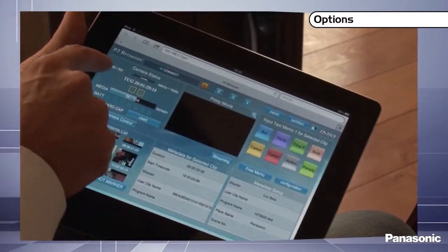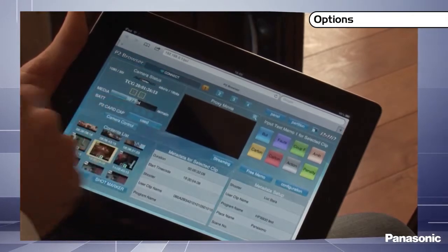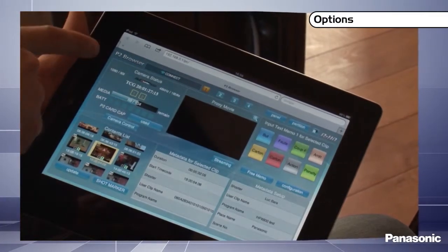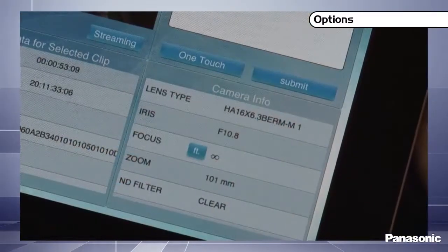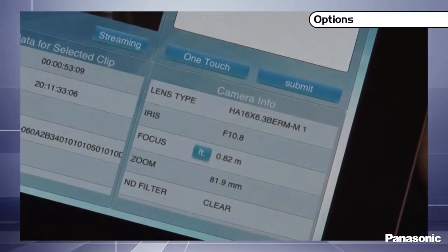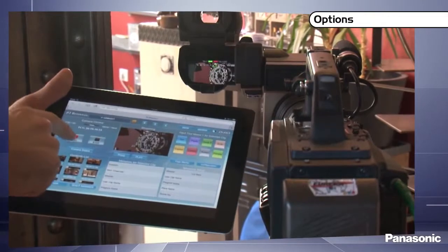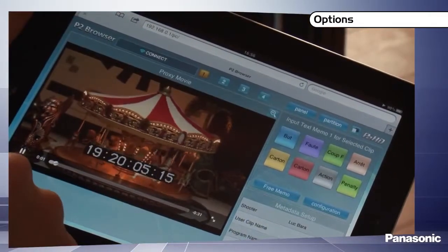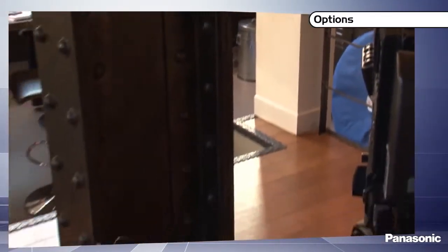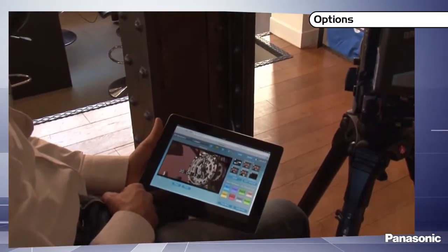Such as camera status, timecode, card and battery life. You can also check the camera and lens settings. It's possible to control the recording. The proxy contents of the cards can be watched and even downloaded. And the streaming function lets you see from a distance what the camera sees.